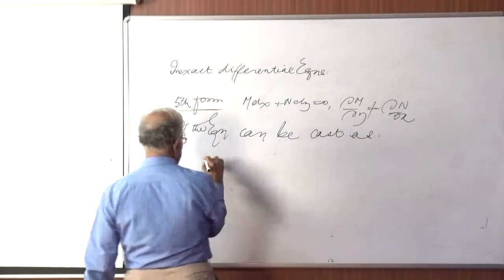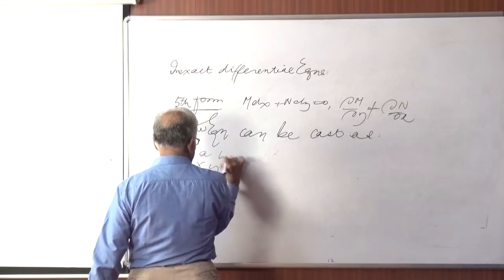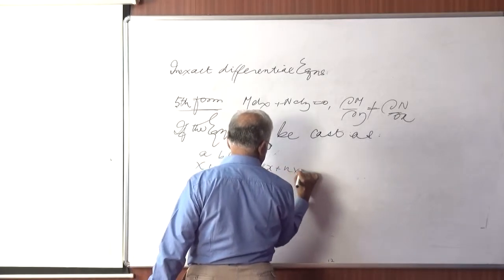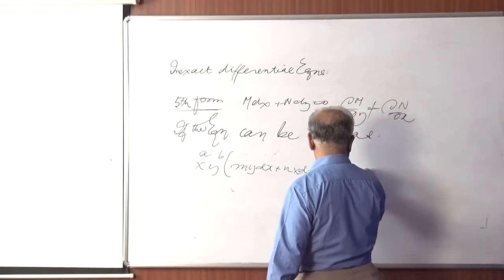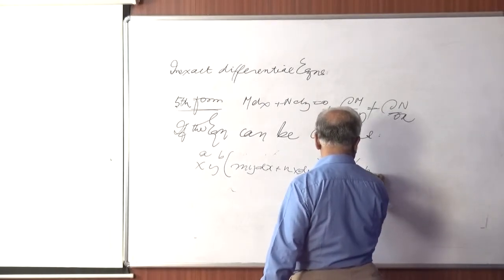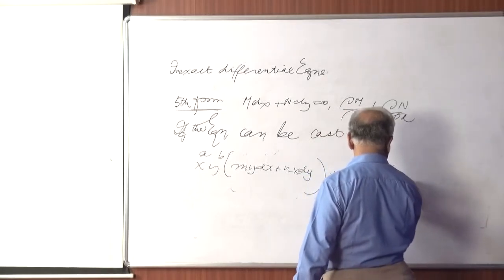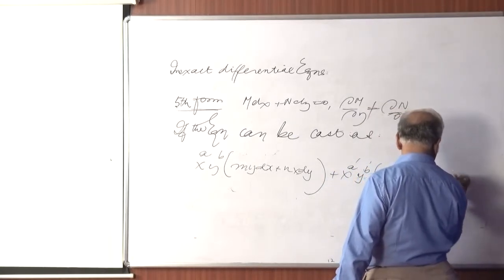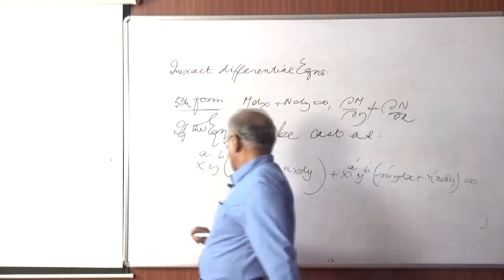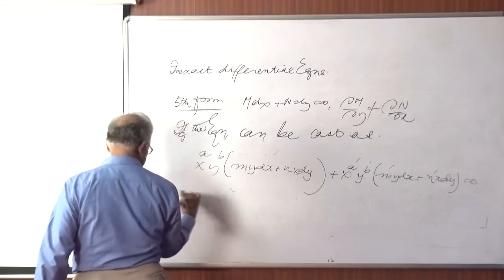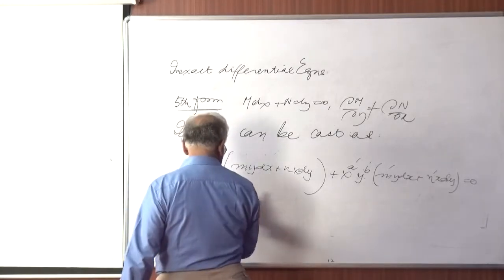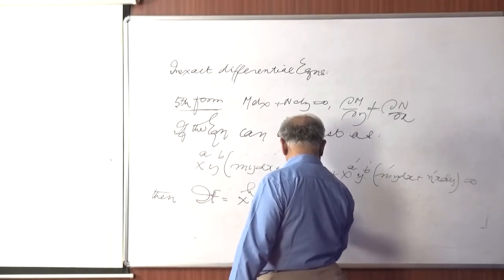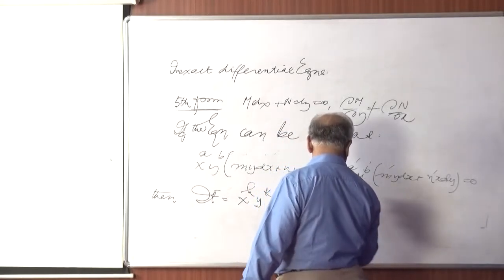If the equation can be cast as x^a·y^b·[m(y) dx + n(x) dy] + x^a'·y^b'·[m'(y) dx + n'(x) dy] = 0, then an IF is of the form x^h·y^k where h and k emerge from these equations.